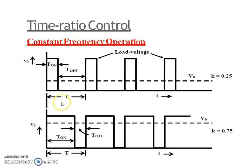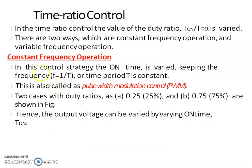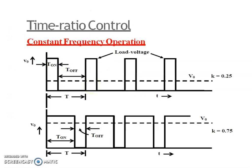In constant frequency control, the total time period is kept constant and we are varying the T_on time within the total time period. Variation of T_on means adjustment of pulse width. As such, this scheme is also called the Pulse Width Modulation scheme, because we are varying the pulse width of the on pulse.